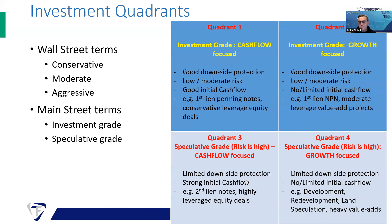Quadrant three and four are speculative grade quadrants. They generally carry a substantial amount of risk, including risk to your principal — you could lose a portion or the entire investment. However, these deals generally have greater upside. The reward has to be commensurate with the risk; if you're taking greater risk, you need to receive higher upside — otherwise, why take the risk? In quadrant three, you're taking on more risk but focusing on cash flow, so you should be receiving higher cash flow than in quadrant one.